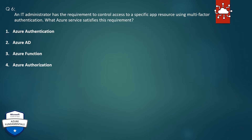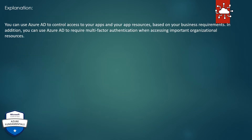Question 6. An IT administrator has the requirement to control access to a specific app resource using multi-factor authentication. What Azure service satisfies this requirement? 1. Azure Authentication. 2. Azure AD. 3. Azure Function. 4. Azure Authorization. The correct answer is Azure AD. Explanation: You can use Azure AD to control access to your apps and your app resources based on your business requirements. In addition, you can use Azure AD to require multi-factor authentication when accessing important organizational resources.